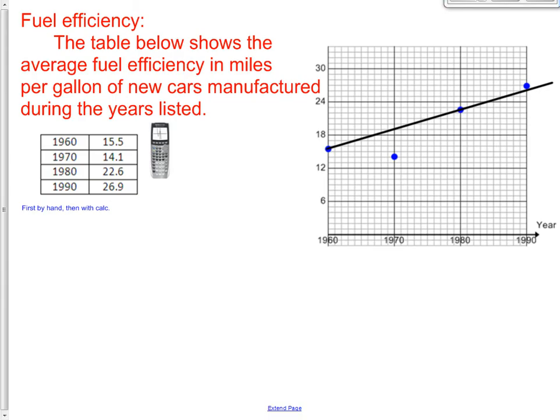Fuel efficiency. The table below shows the average fuel efficiency in miles per gallon of new cars manufactured during the years listed. So what happened here is in 1960 they made these automobiles and the average car got 15.5 miles to the gallon. Interestingly enough, 10 years later, 1970, it went down. It got 14.1 miles to the gallon.